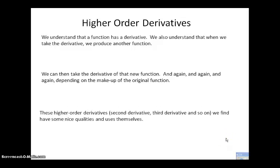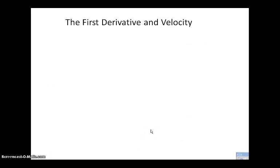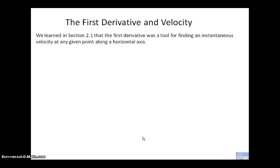So the higher order derivative — the second derivative, third derivative, and so on — have nice qualities in the real world, and we're going to use them. They have really nice qualities in the xy plane. The Leibniz notation we explored is also used for higher order derivatives, and we'll see what Leibniz notation looks like for higher and higher order derivatives at the end of this lesson.